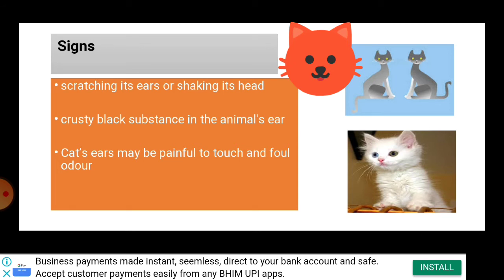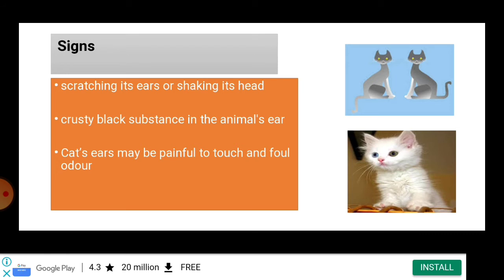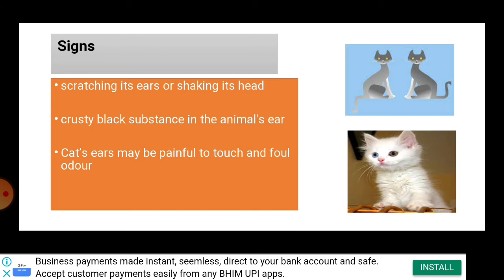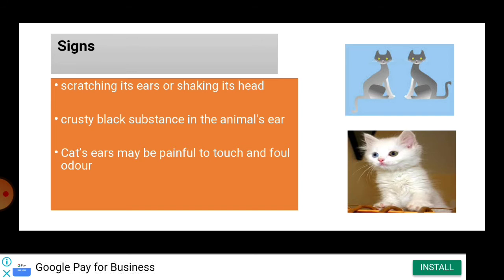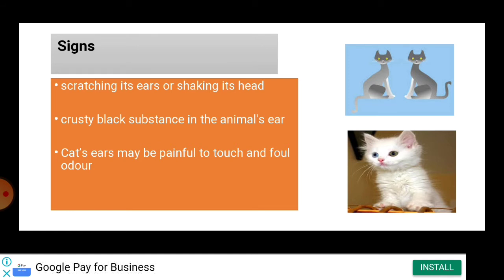Severe middle ear disorder can cause the animal to lose balance, become disoriented, and show severe physical signs of distress. Ear mites are terribly uncomfortable for cats. The first symptoms noticed are scratching of the ears and shaking of the head due to extreme itching and redness. Cats may shake their ears so intensely that small blood vessels break and hematoma may develop. Another common symptom is a crusty black substance — dark wax — in the animal's ear.